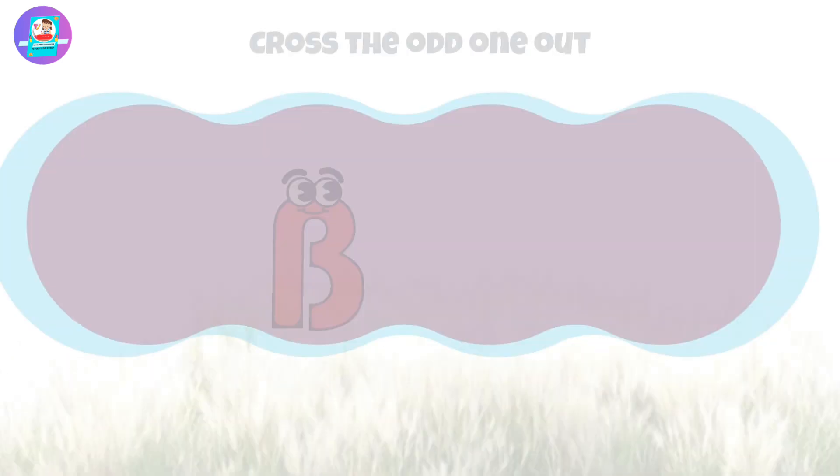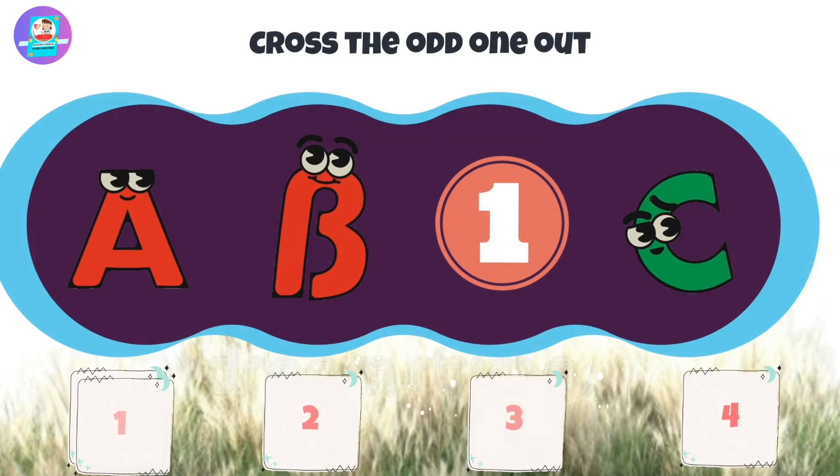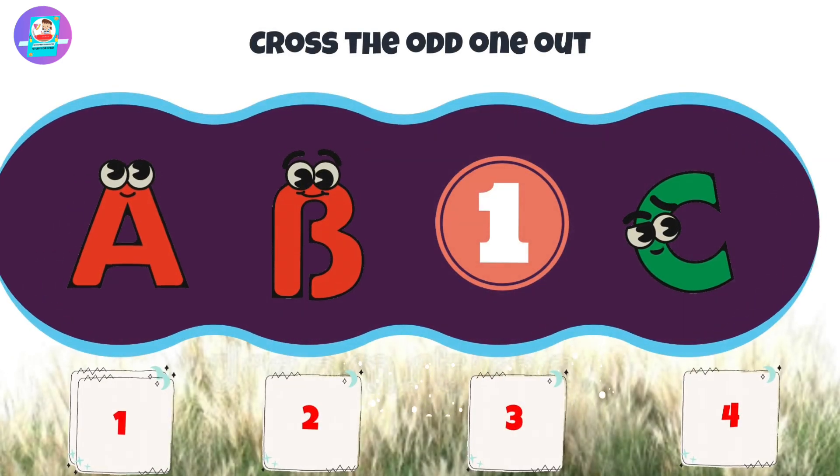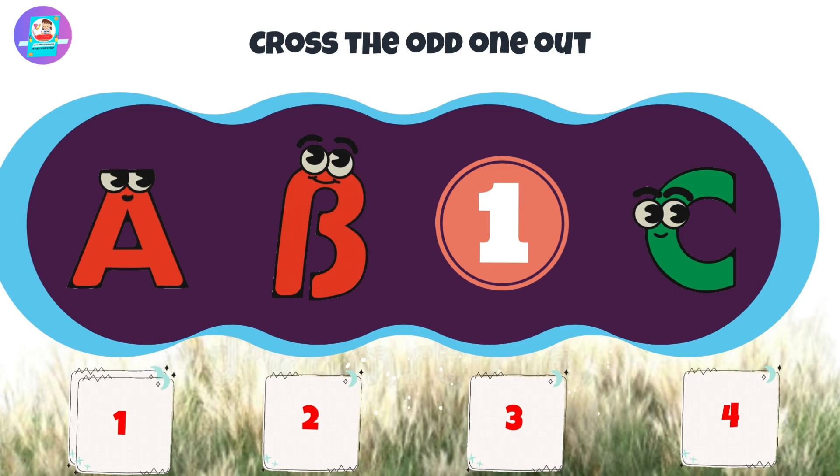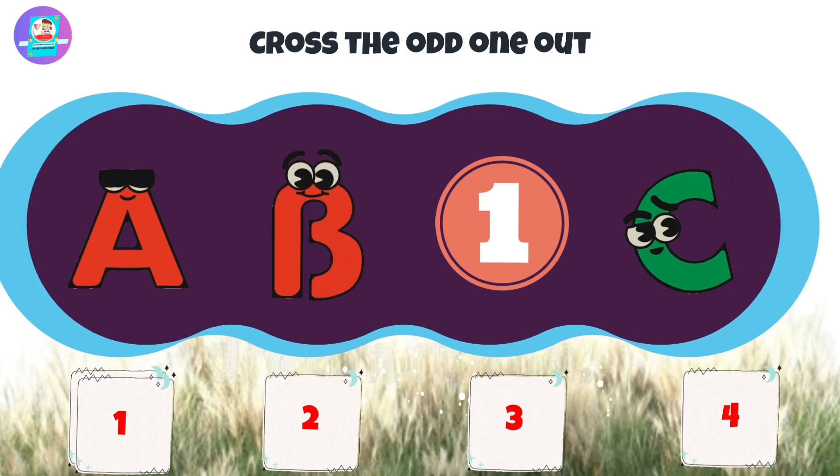Next, there are 4 pictures: 1, 2, 3, 4. Put the odd one out.